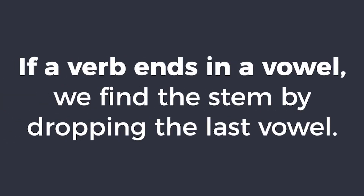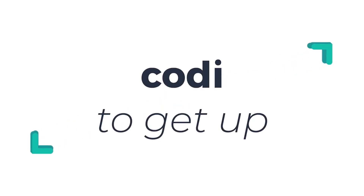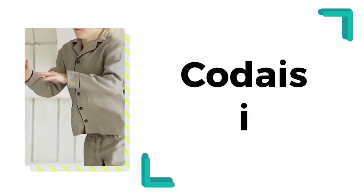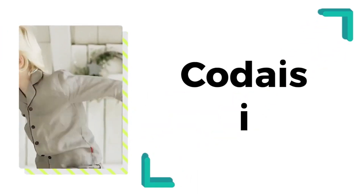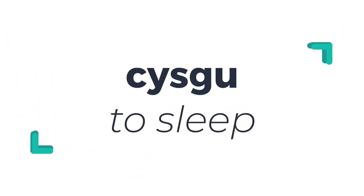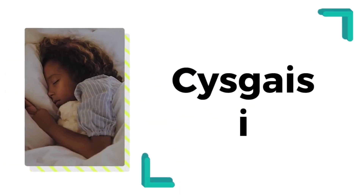Er enghraifft — if a verb ends in a vowel, we find the stem by dropping the last vowel. Er enghraifft: Codi — to get up — Codais i. Cysgu — to sleep — Cysgais i.